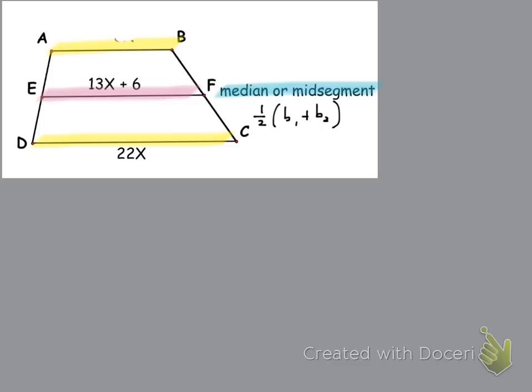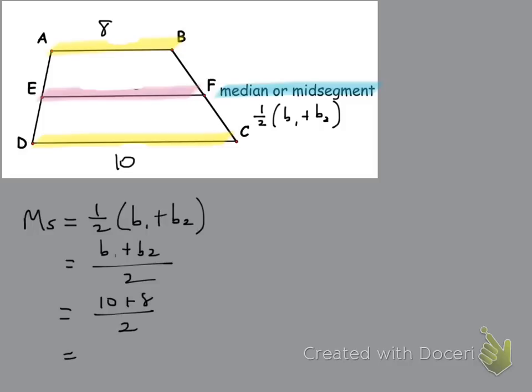So if I take these out for just a second, and instead we put, let's do a ten here, and an eight here. If we wanted to figure out the length of the mid-segment, what we could do is, we could say the mid-segment is equal to, again, half times base one plus base two, or I like to write it like this, base one plus base two divided by two, and so then what you're going to end up with is ten plus eight divided by two, or eighteen divided by two, and in this case the mid-segment would equal nine.